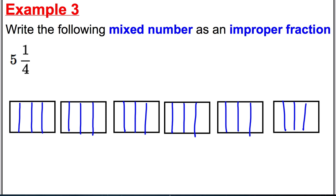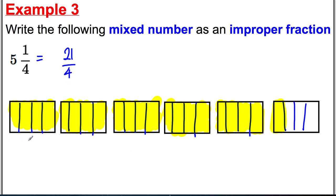We shade five whole boxes and one quarter of the sixth box. Counting up: four, eight, twelve, sixteen, twenty — plus one more — gives twenty-one. So the answer is twenty-one over four. Counting in fours using your times tables makes it much easier.